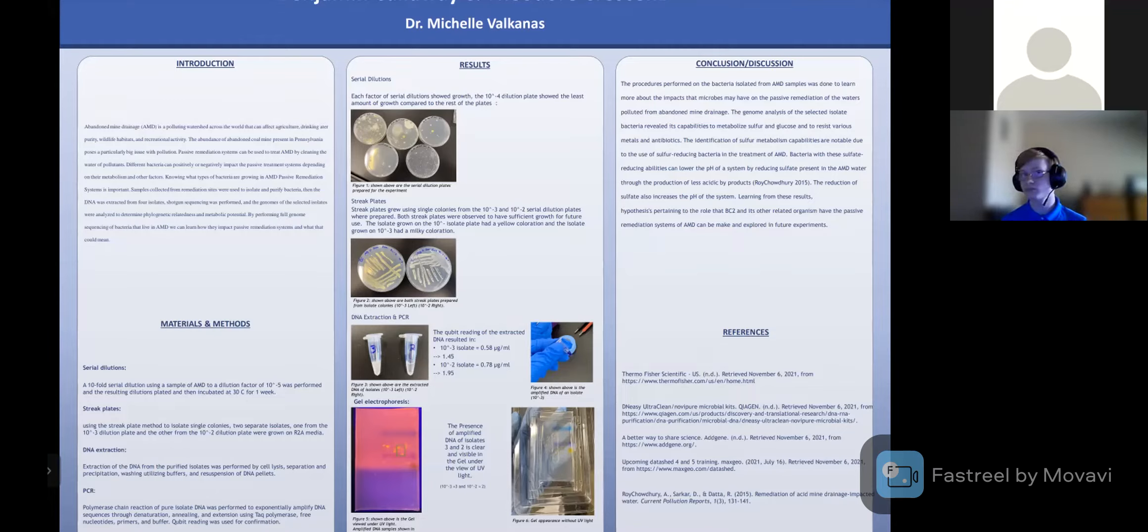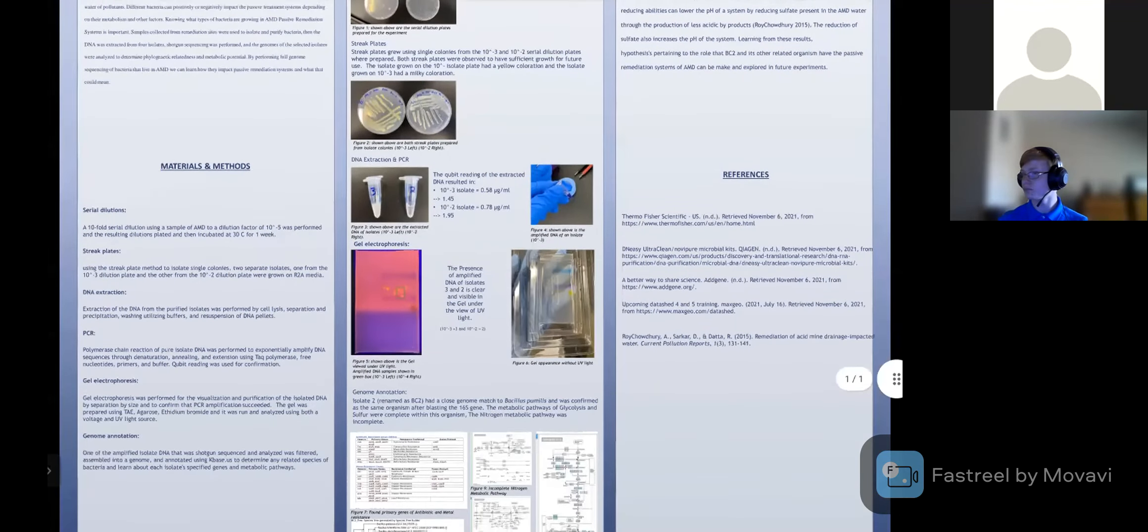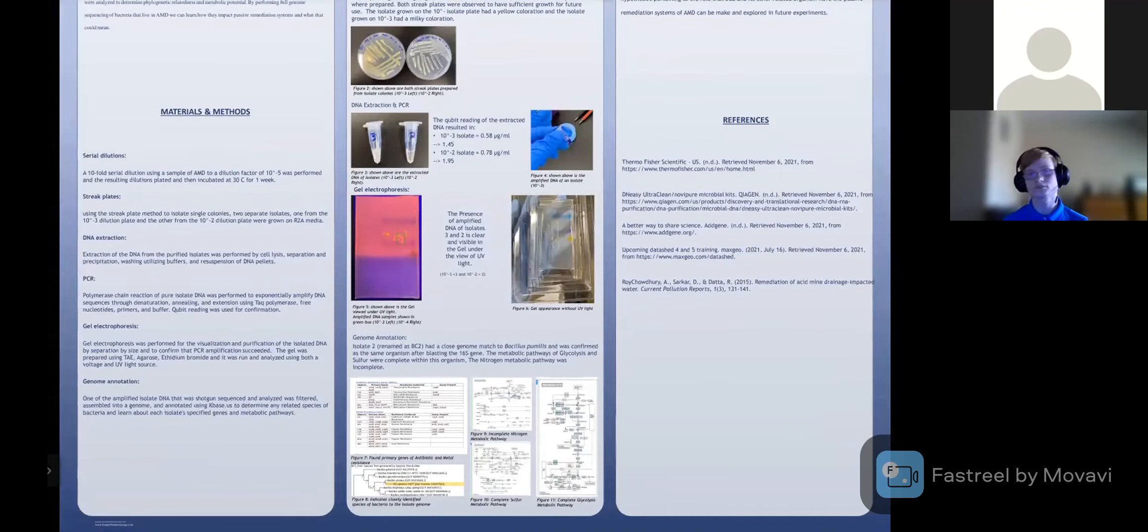When we performed our DNA extraction and PCR experiments, unshown on the left was the result of our extracted DNA, 10 to 3 being on the left and the 10 to 2 labeled on the right. The qubit readings of the extracted DNA resulted in negative 3 isolate equaled 0.58 micrograms per ml to 1.45 and the 10 to negative 2 isolate equaled 0.78 micrograms per ml, which turned into 1.95. Shown on the right of those numbers is the amplified DNA of the isolate 10 to negative 3.